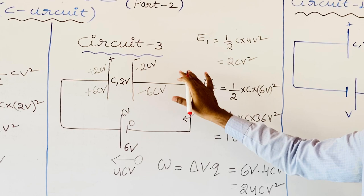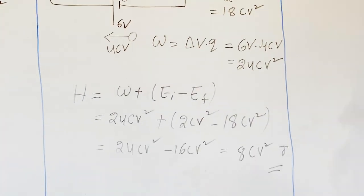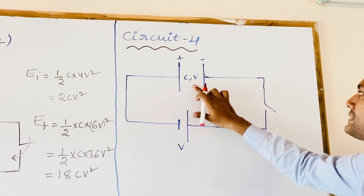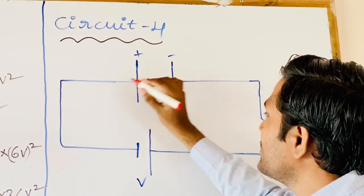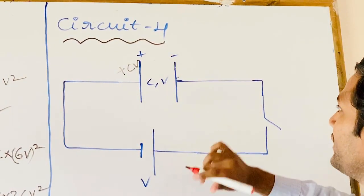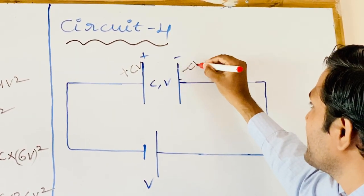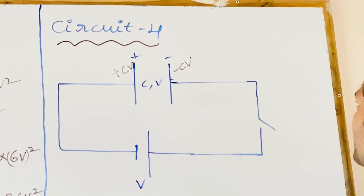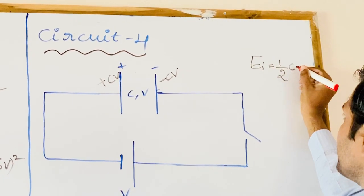Now we come to circuit 4. In circuit 4, the capacitor is initially charged up to potential V. The charge on the plates before closing the switch is plus CV and minus CV. The total energy stored between the plates is EI equals half CV squared.